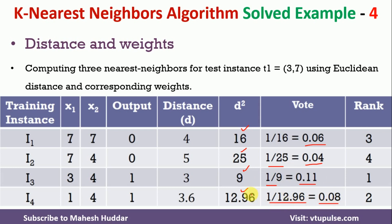Notice that the minimum distance of 3 yields the highest inverse square distance weight of 0.11, meaning the smaller the distance, the greater the weight assigned to that instance. We then assign ranks based on these weights: 0.11 gets rank 1, 0.08 gets rank 2, 0.06 gets rank 3, and 0.04 gets rank 4.